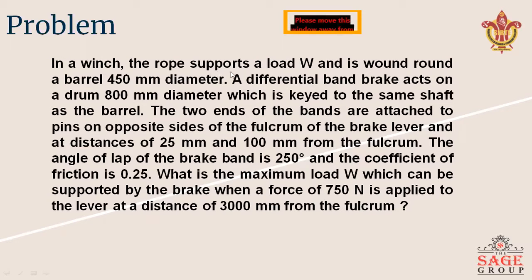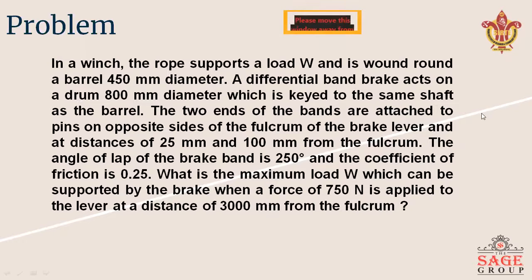In a winch machine, the rope supports a load W and is wound around a barrel of 450 mm diameter. A differential band brake acts on a drum of 800 mm diameter, which is keyed to the same shaft as the barrel. The two ends of the band are attached to a pin on opposite sides of the fulcrum of the brake lever, at distances of 25 mm and 100 mm from the fulcrum.